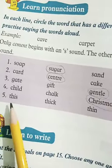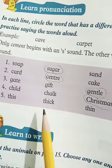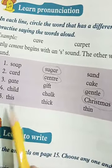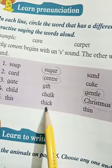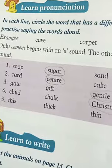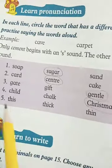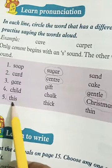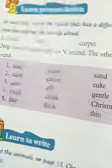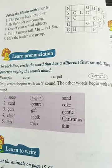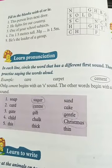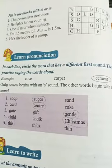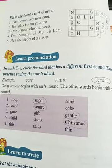Next: this, thick, thin. Which one is different? This — so we will circle 'this.' Alright, complete these works. Jazakallah. Assalamualaikum warahmatullahi wabarakatuhu.